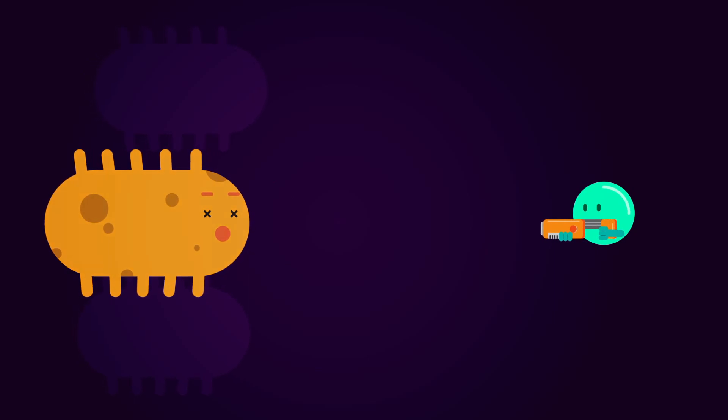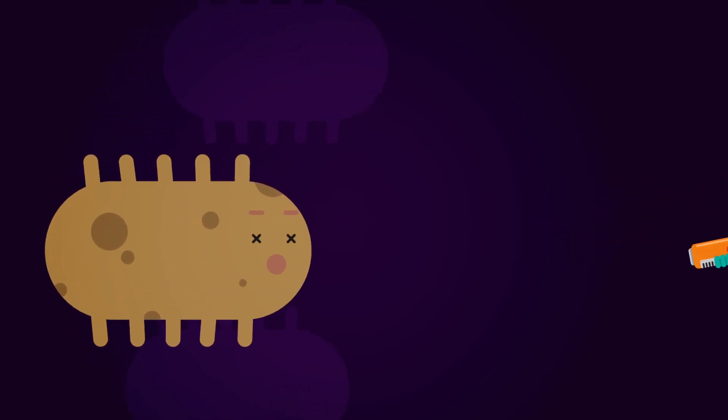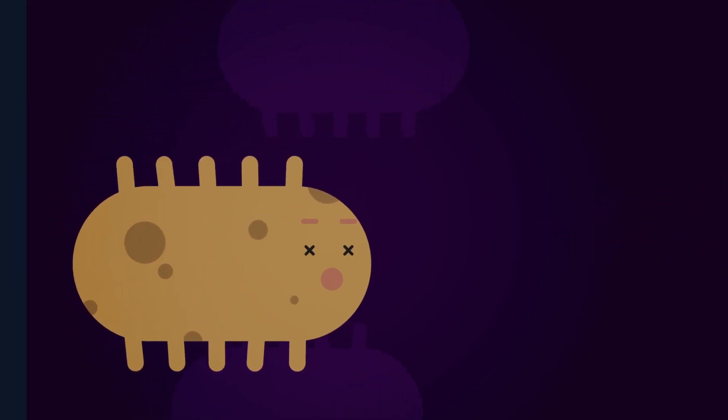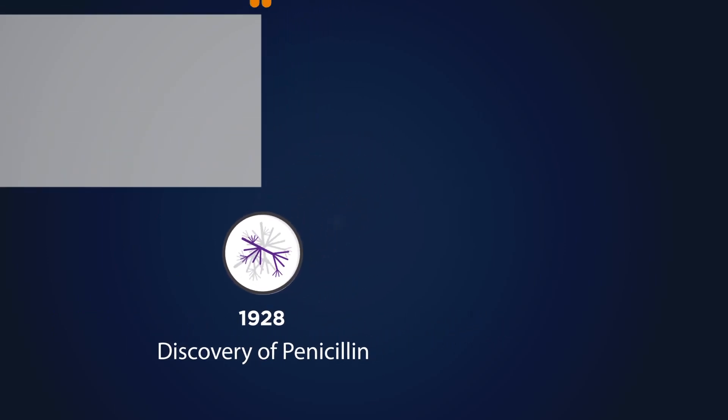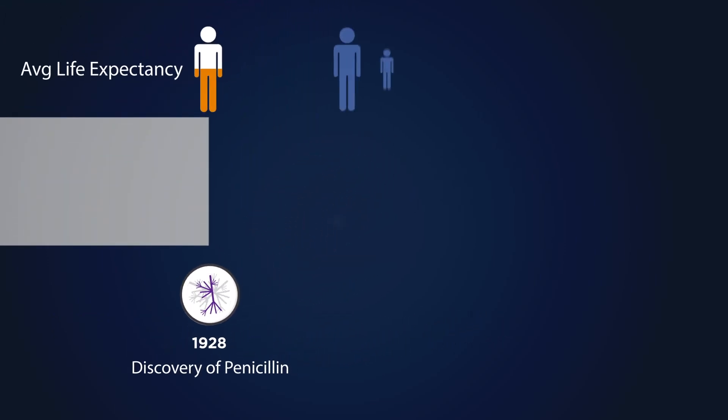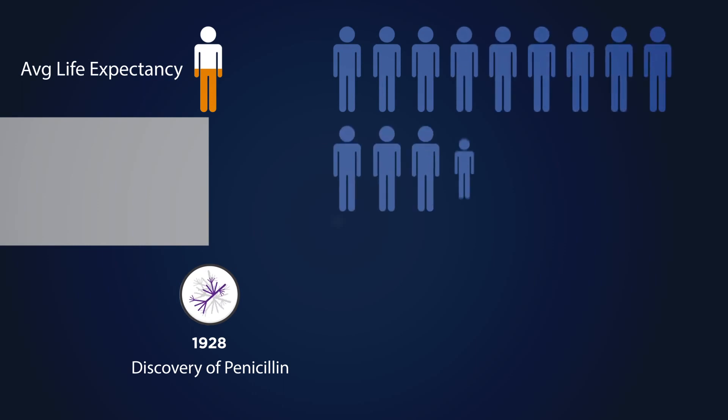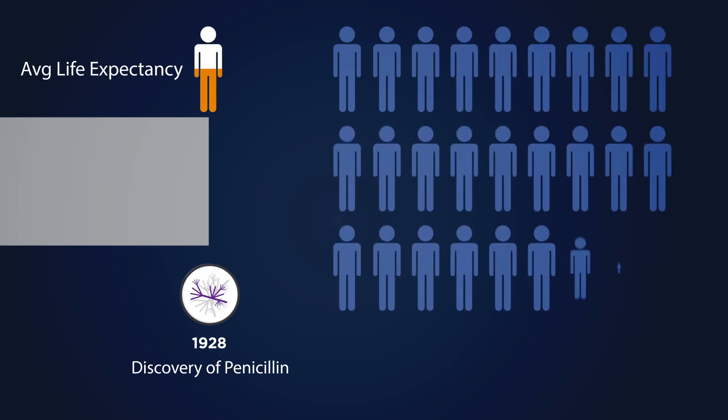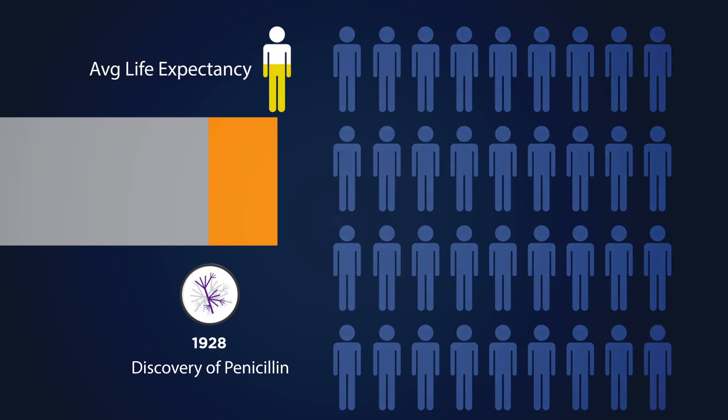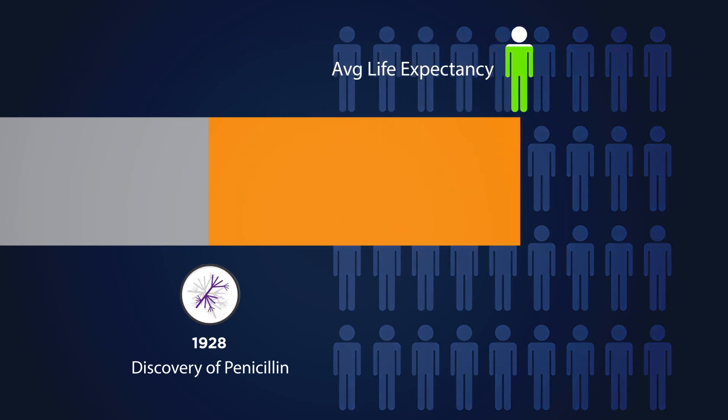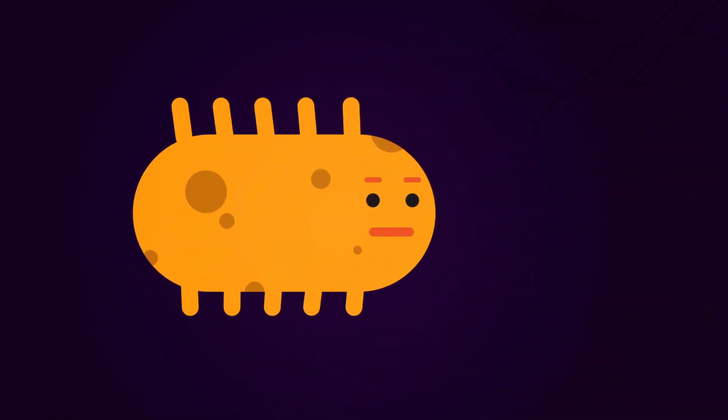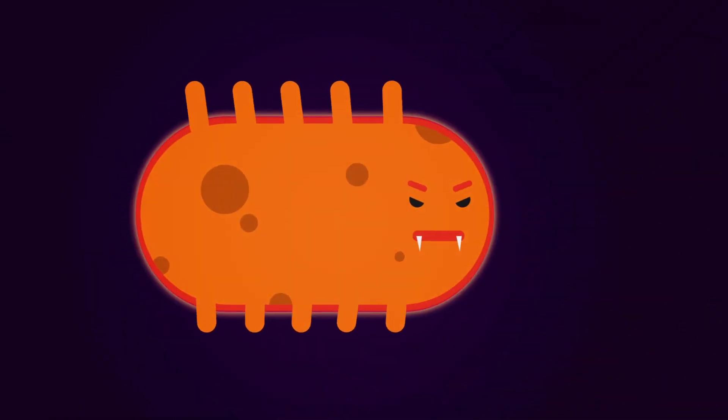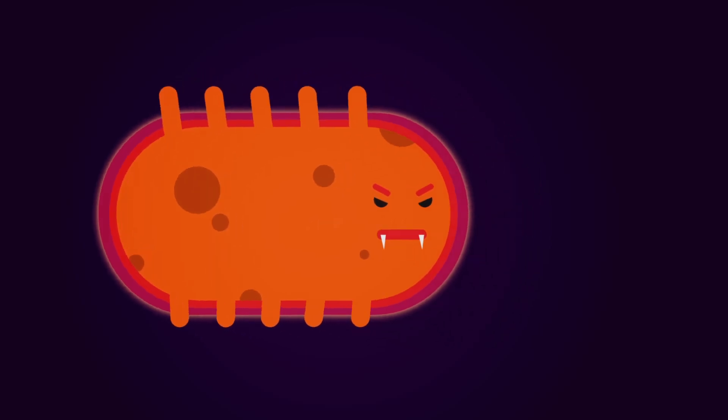With the discovery of penicillin back in 1928, antibiotics have been used massively for curing diseases caused by bacteria. It has saved millions of lives around the world and the average life expectancy has increased considerably since then. But bacteria has been fighting back. They have developed resistance mechanisms with time.